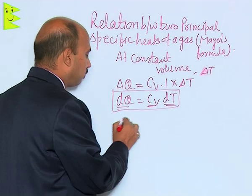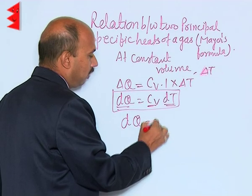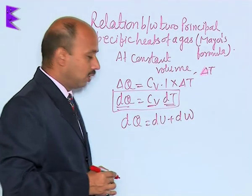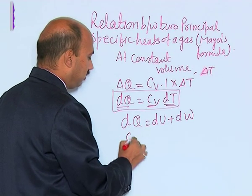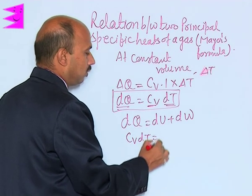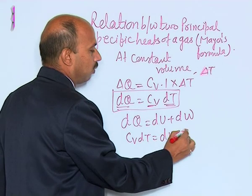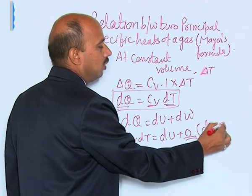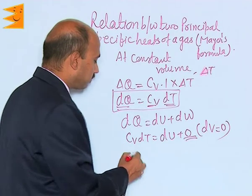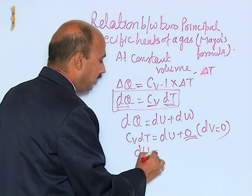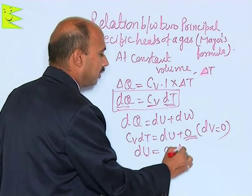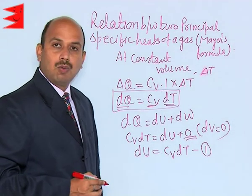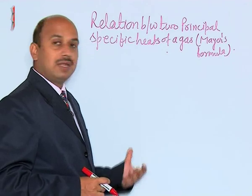Using the first law of thermodynamics, dQ equals dU plus dW. We can write Cv dT equals dU plus 0, because volume is constant, so dV is equal to 0 and the work done is 0. Therefore, dU equals Cv dT. This is equation number 1. Now we have done the analysis at constant volume.